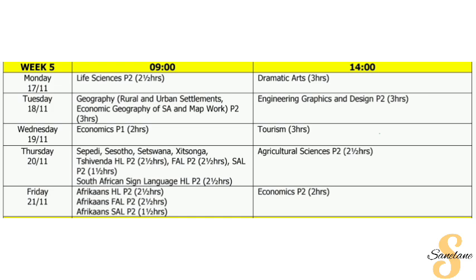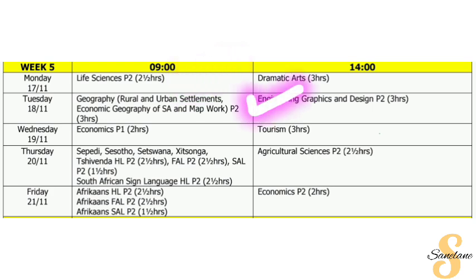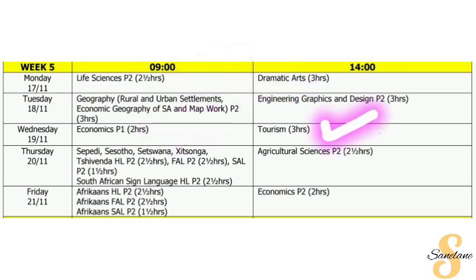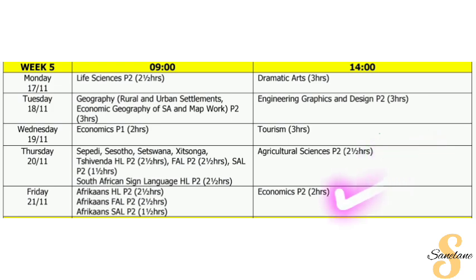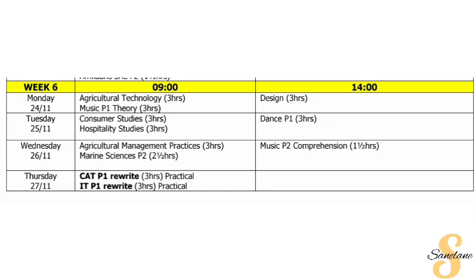Starting that Monday, we will make sure that over the weekend we prepare you for Life Sciences Paper 2. We also have Geography Paper 1, Economics Paper 1, a Tourism paper, and Agriculture on the 20th. Then we have Economics Paper 2 that Friday, which is the 25th of November.